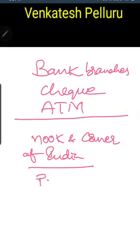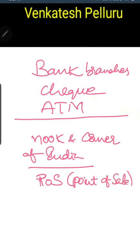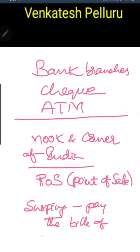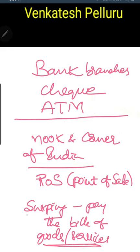The devices used for withdrawing cash are POS terminals. POS stands for Point of Sale devices. These are nothing but swiping machines which you will see at most supermarkets and merchant stores. Generally, swiping of cards is done to pay bills for purchasing goods and services. But as per the RBI circular, you can also use POS terminals for withdrawal of cash.